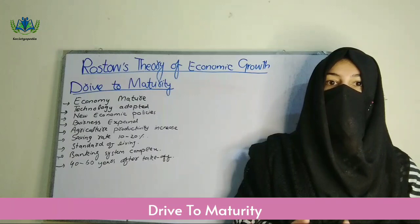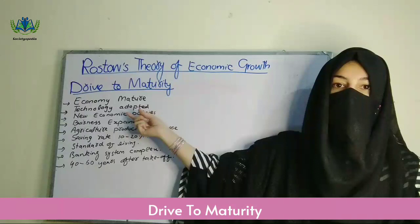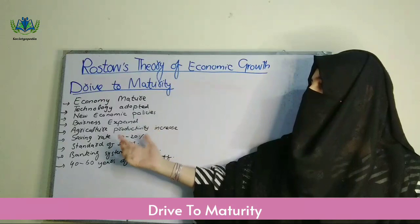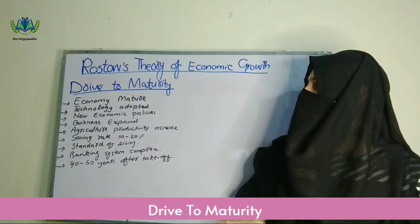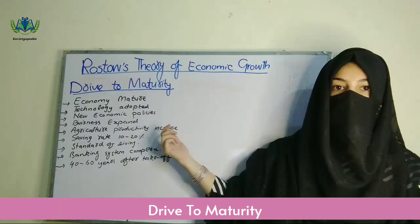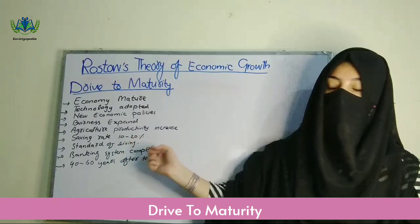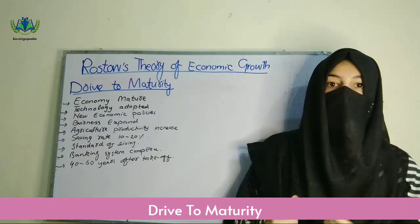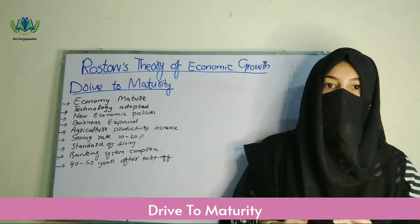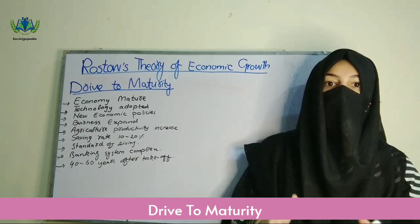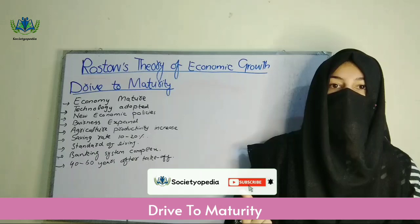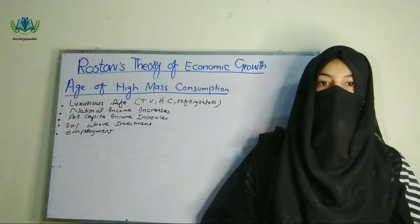The fourth stage is drive to maturity. In this stage, the economy of any country or society starts to become stable. Technology that was introduced in the take-off stage is now adopted. New economic policies are introduced to increase profit, businesses are expanded, and agricultural productivity increases due to technological advancement. The banking system becomes complex, and it takes 40 to 60 years for any society or country to go from take-off to this stage.